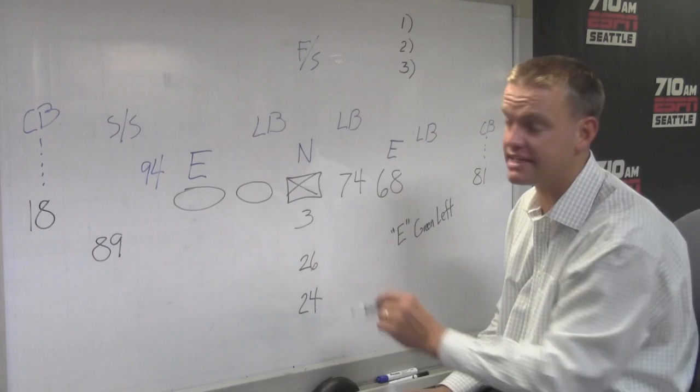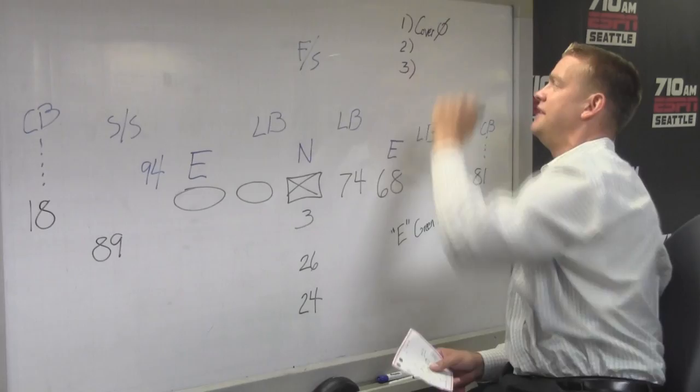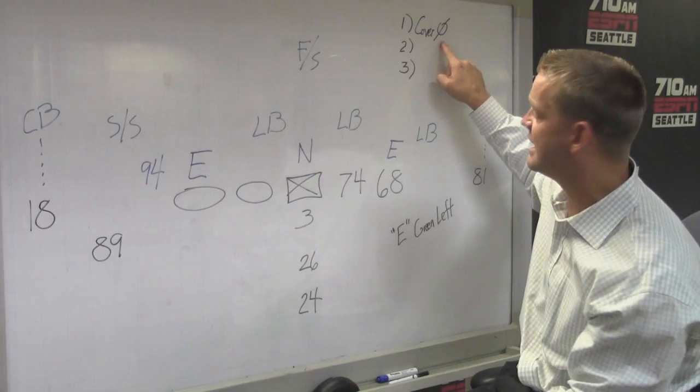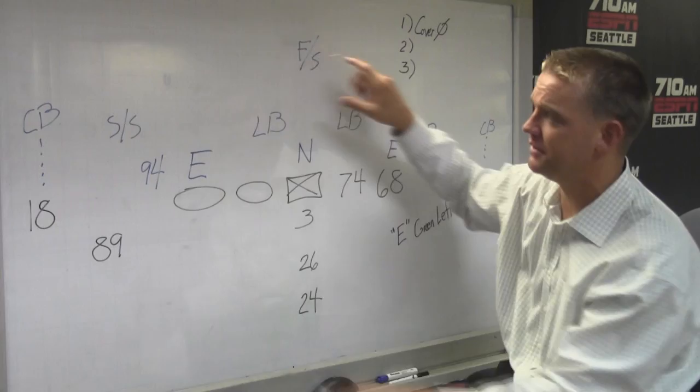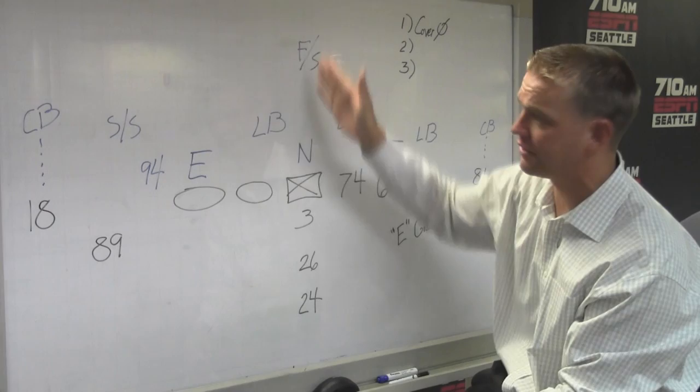This was a 36 yard run by Marshawn Lynch. Let me start with a term you've heard in football called cover zero. Cover zero just means when it's said and done and when everybody rotates, there are zero safeties left in the middle of the field. Instead of two deep safeties or a single safety, this gets to cover zero.